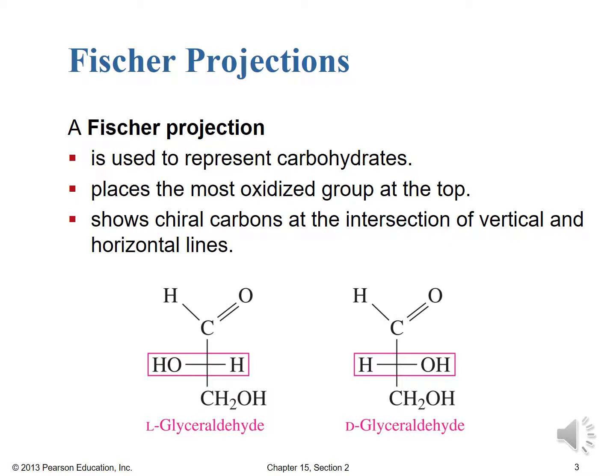A Fischer projection is used to represent carbohydrates. It places the most oxidized group at the top — that's carbon one for aldoses or carbon two for ketoses — and then all the chiral carbons are shown as intersections of vertical lines. For glyceraldehyde, there's only one chiral carbon in the middle, and the difference between L-glyceraldehyde and D-glyceraldehyde is shown in the Fischer projection.